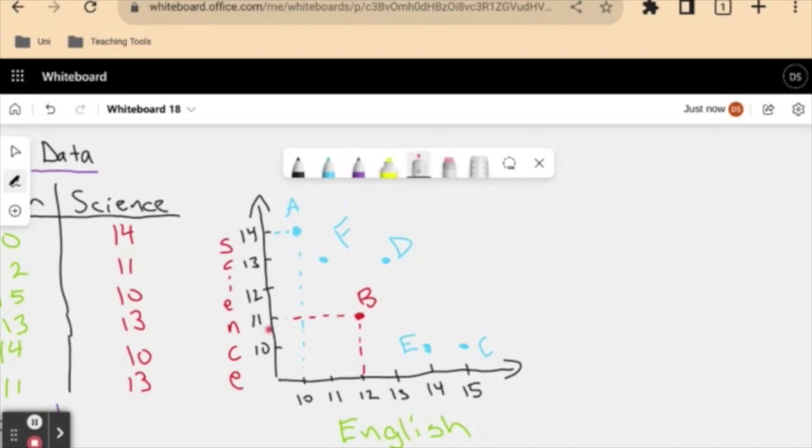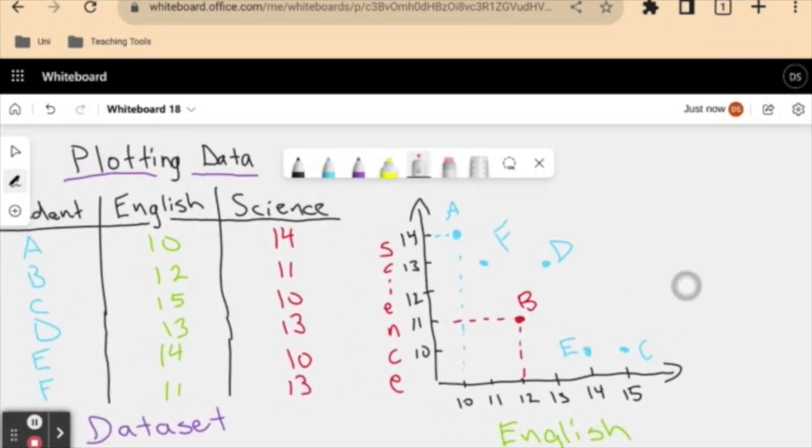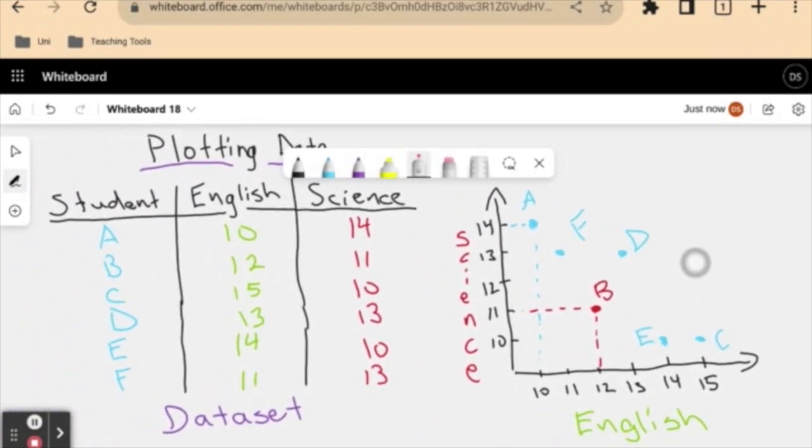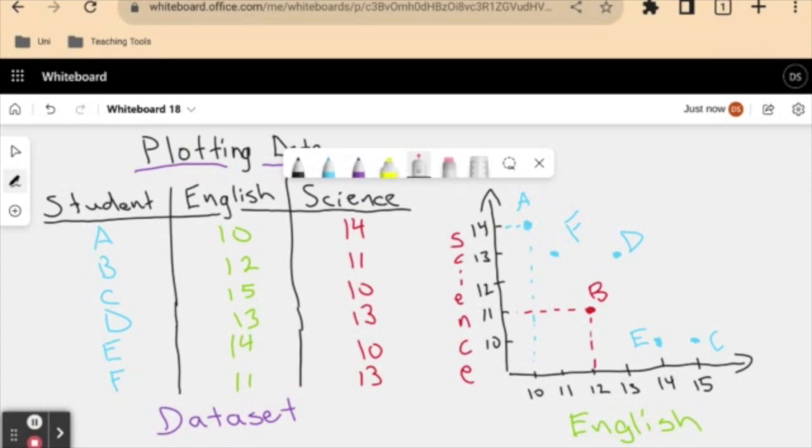But this is, in essence, the idea of a scatter plot. We've taken bits of information here, we've taken two bits of information from each student, their English mark and their science mark, and we have represented our data set as a graph on the right hand side. So we've taken each of these students almost as a coordinate on a map of these two subjects.